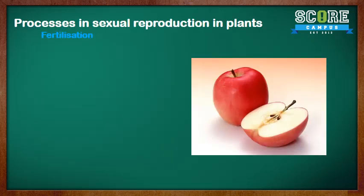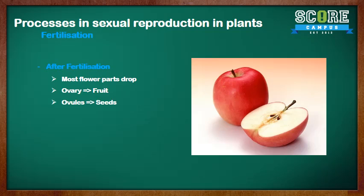After fertilization, most of the flower parts drop off. The ovary that remains will develop into the fruit, and the ovules will develop into the seed. For example, with this apple you see here, the entire apple was initially the ovary, and the seeds were initially the ovules.